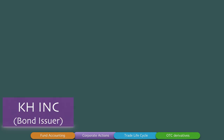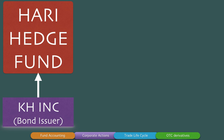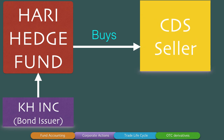Looking at the flow chart: KH Inc. is the bond issuer and has issued bonds to Hari Hedge Fund — this is the underlying trade. Hari Hedge Fund is not comfortable with the risk exposure and wants to buy protection against the default of KH Inc., so it buys a CDS from the CDS seller. The dates could be different: the date of issuance of bonds could be 3 years before and you might decide to start the swap 3 years after the bond has been in issuance. The CDS seller is guaranteeing payment to Hari Hedge Fund if KH Inc. defaults.